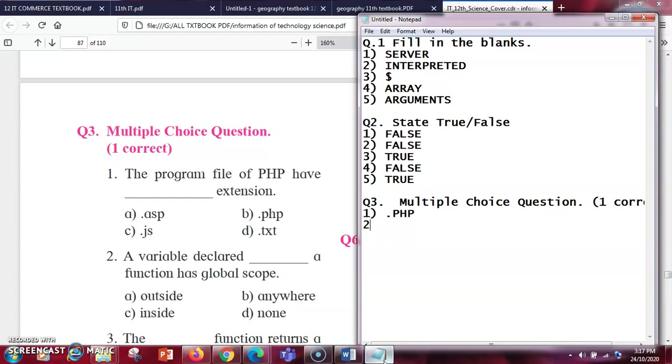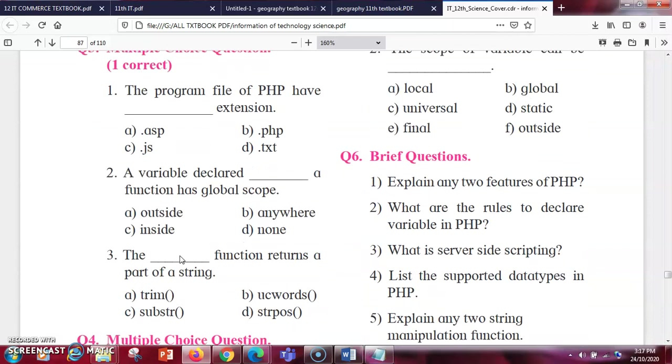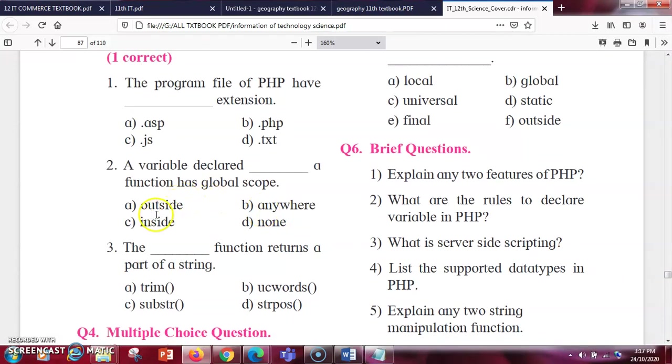Next question, a variable declared dash a function has a global scope. So any variable which you place outside a function, you call it as global. And when it is placed inside, then you call it as local. So the answer here is outside. The variable should be outside your function.